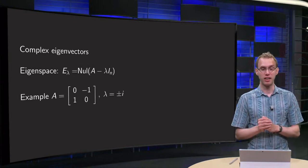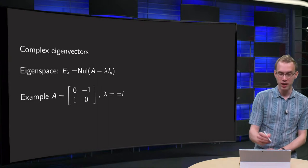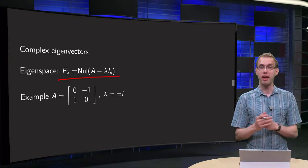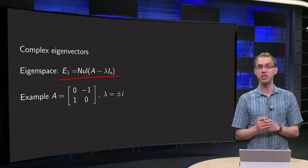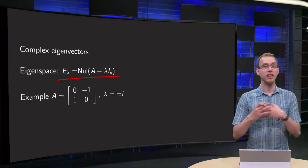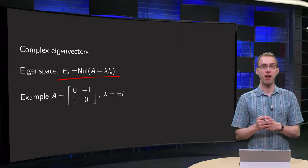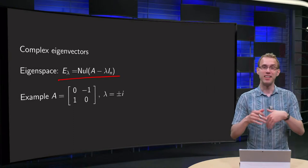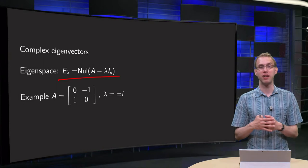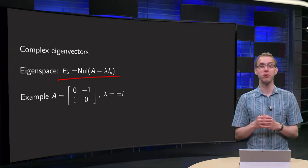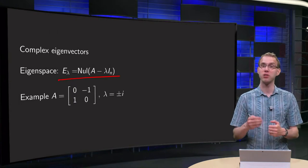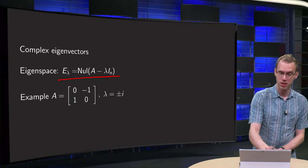How can we find the eigenspace? The eigenspace is the null space of the identity matrix, and even though we have complex eigenvalues, we can still try to do that, because in this whole derivation of how we found the eigenvalues, we never used the fact that the eigenvalues were real. So we can just try to do the same, but now with complex eigenvalues, and let's see what happens.